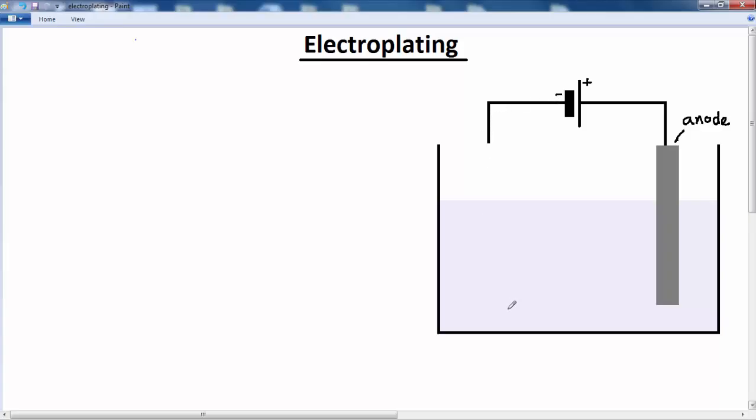So to help us understand electroplating, let's say that I've got a steel fork, there like that. And I want to cover it with copper, for example. How do I go about doing this?